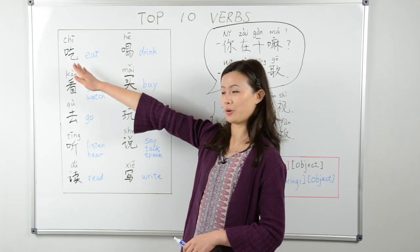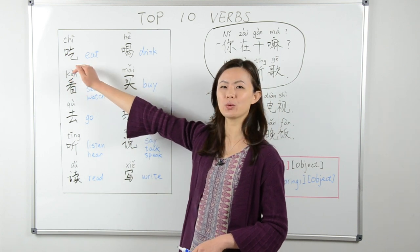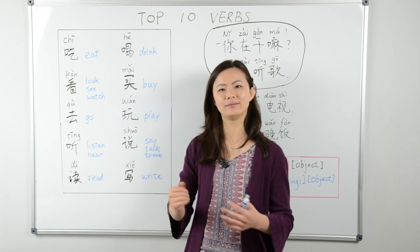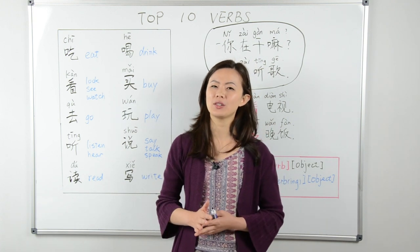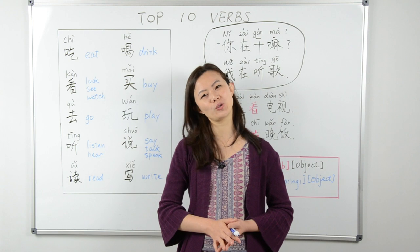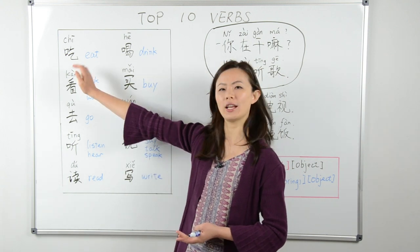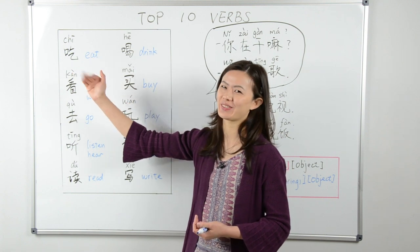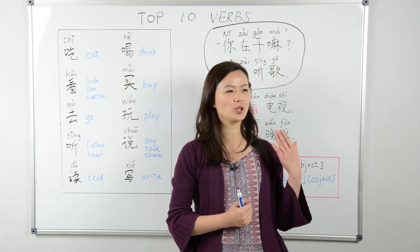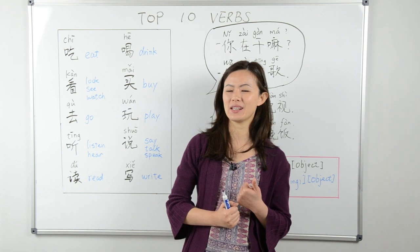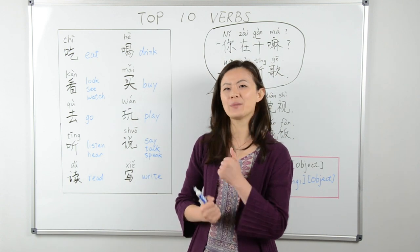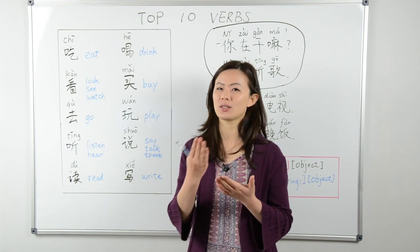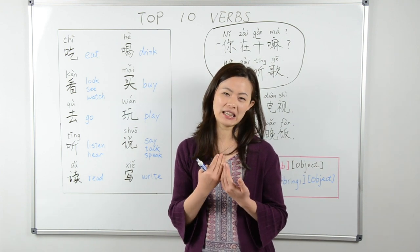Our first verb is 吃. 吃 means eat. Eating and food is such a big part of Chinese culture, so of course 吃 has to be the first one on our list. You can say 吃 pizza — eat pizza — or 吃饺子 — eat dumplings. Just like in English, 吃 is to consume or take in anything solid.